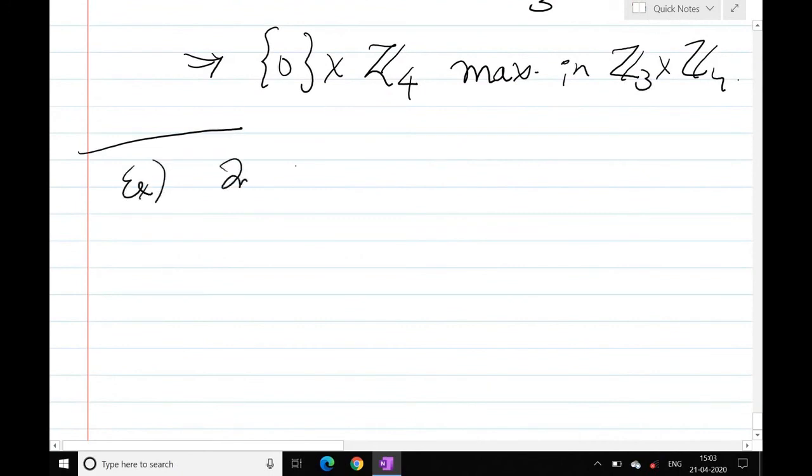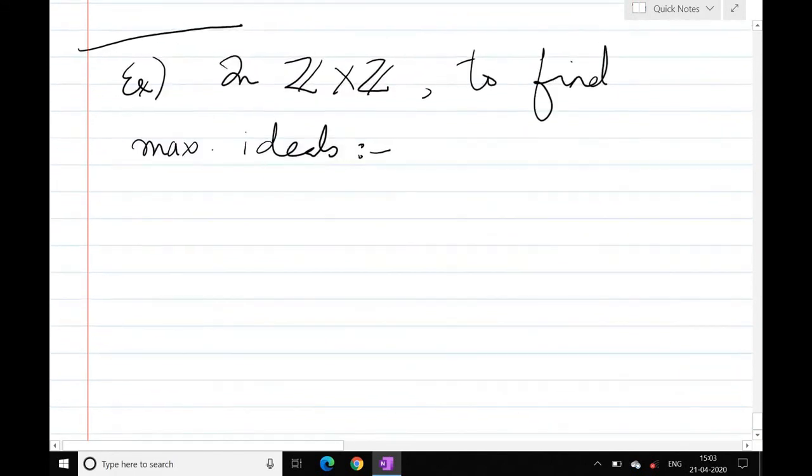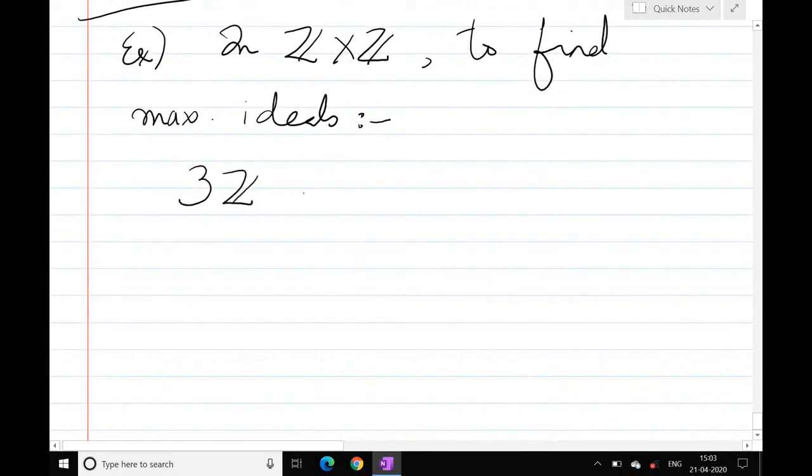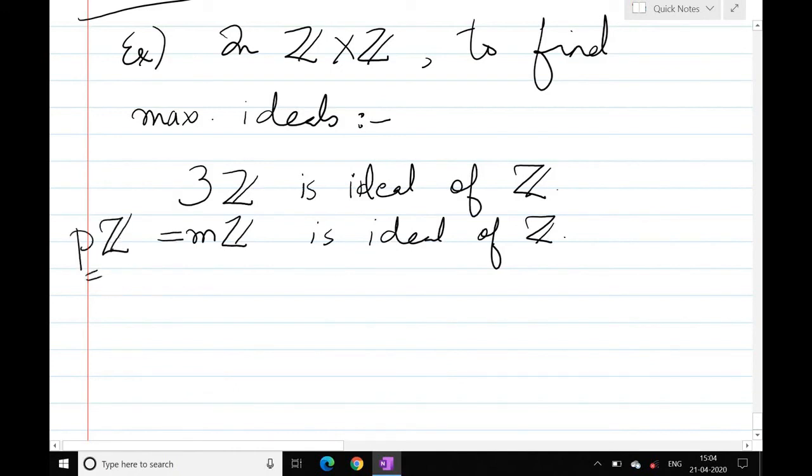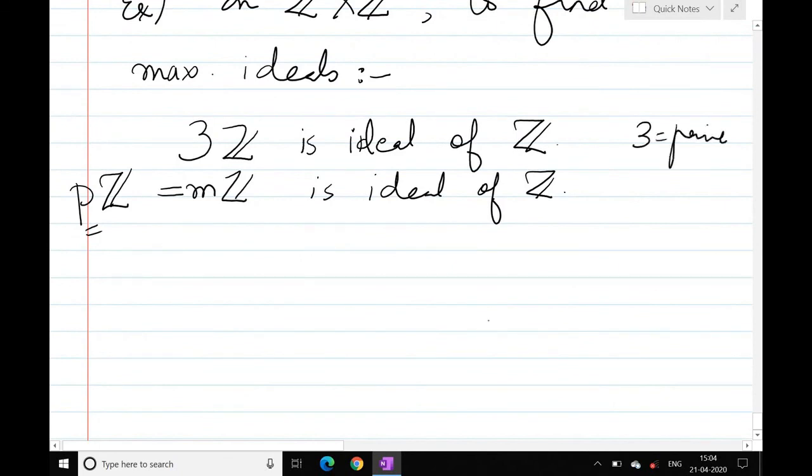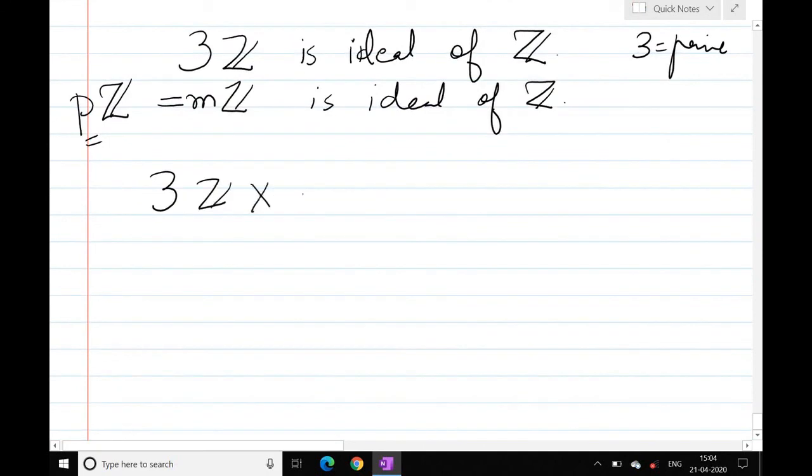So if I look in Z cross Z to find maximal ideals and what I will do, I know 3Z is an ideal. So if I look in Z, we know in general that nZ is ideal. And here I am going to take prime, I am going to take pZ, 3 is prime. Now 3Z cross Z will be an ideal of Z cross Z.